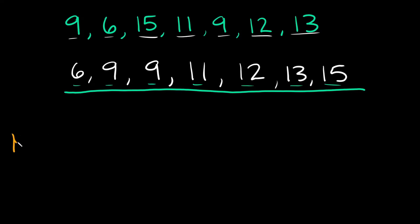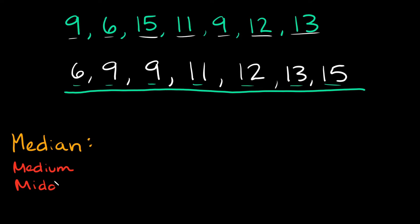The next thing we have to find is the median. The median is just the middle number in your set of numbers. A way to remember median is that it sounds like 'medium' or 'middle' — you're trying to find the medium or middle number. The first thing you have to do is place all the numbers in order from least to greatest, which we already did.